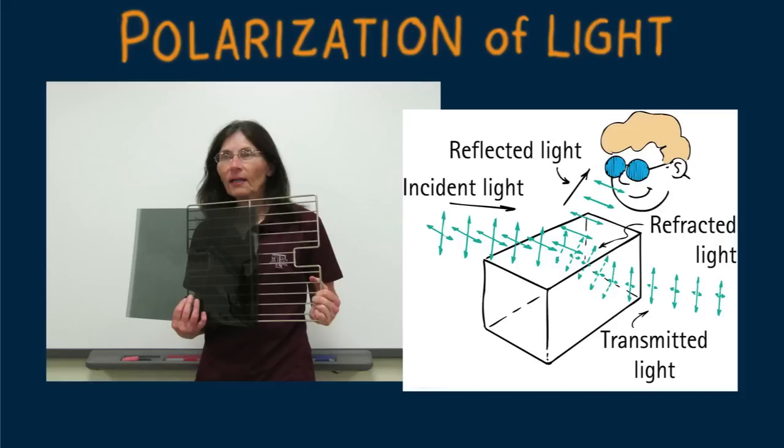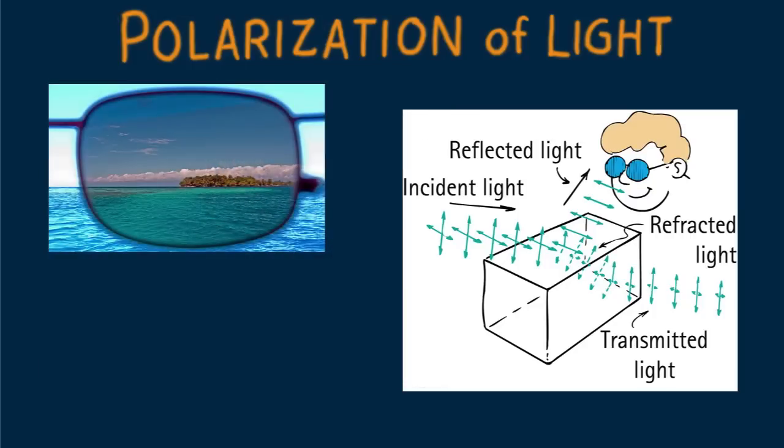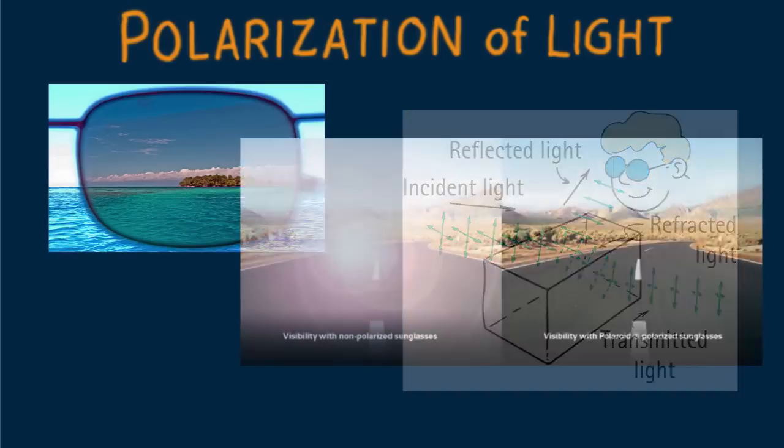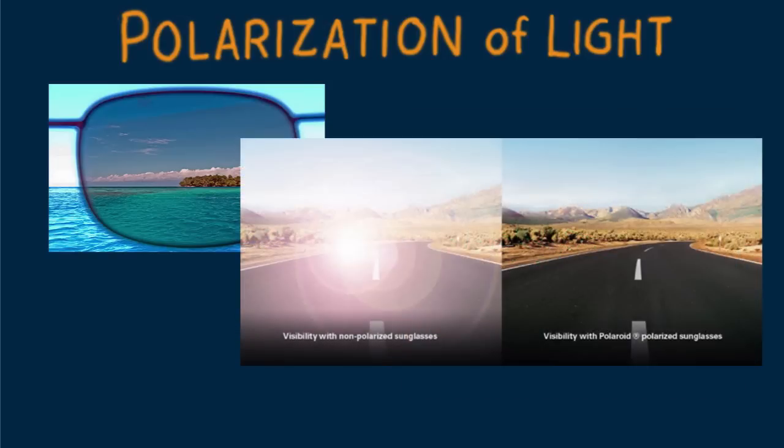The glare from reflecting surfaces can be appreciably diminished with the use of polaroid sunglasses. The polarization axes of the lenses are commonly vertical because most glare reflects from horizontal surfaces.